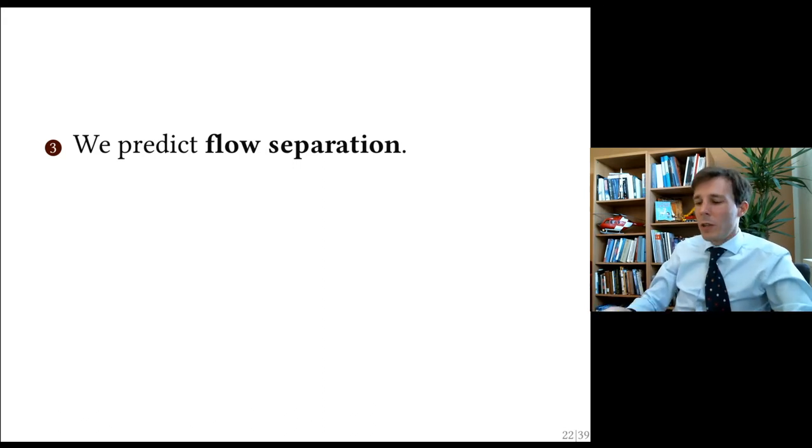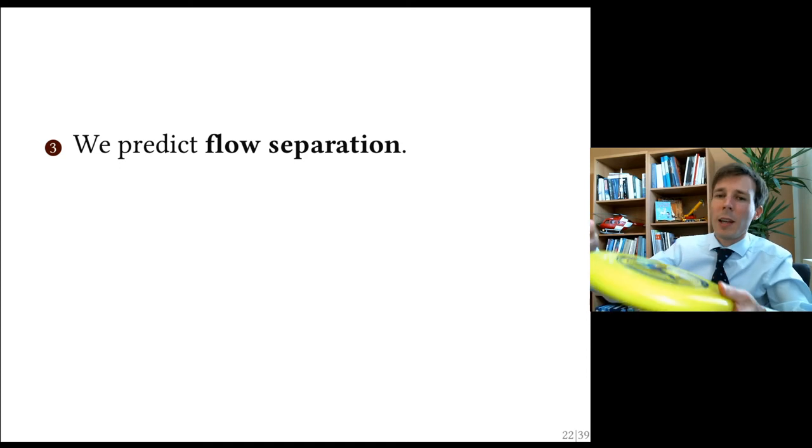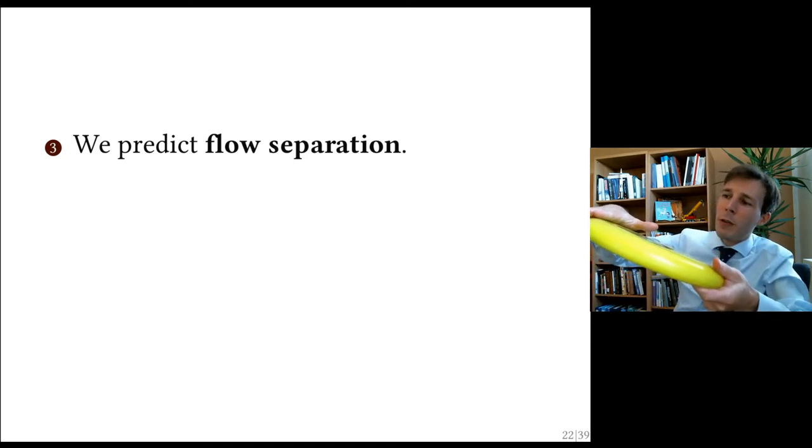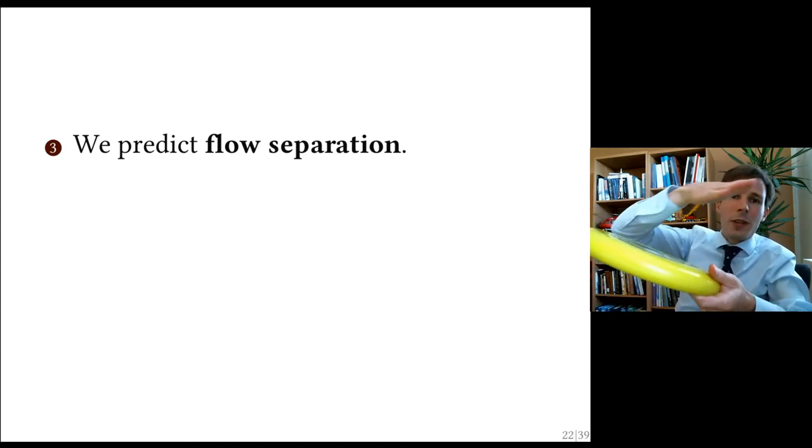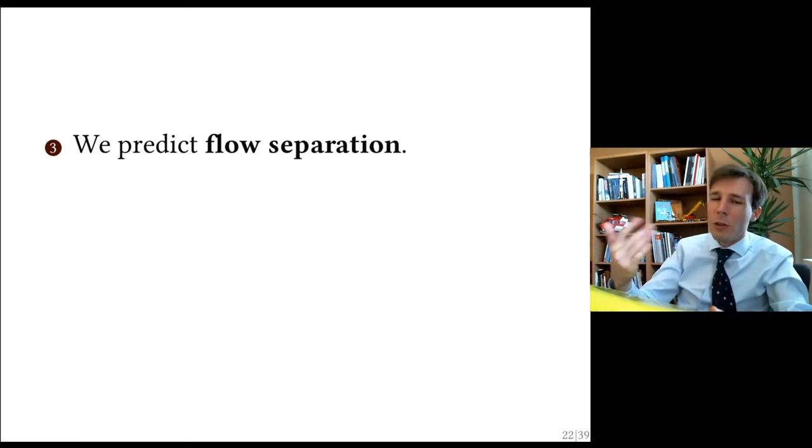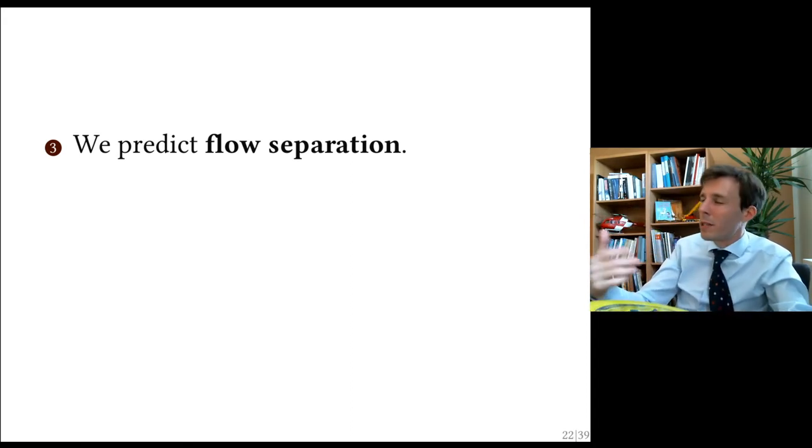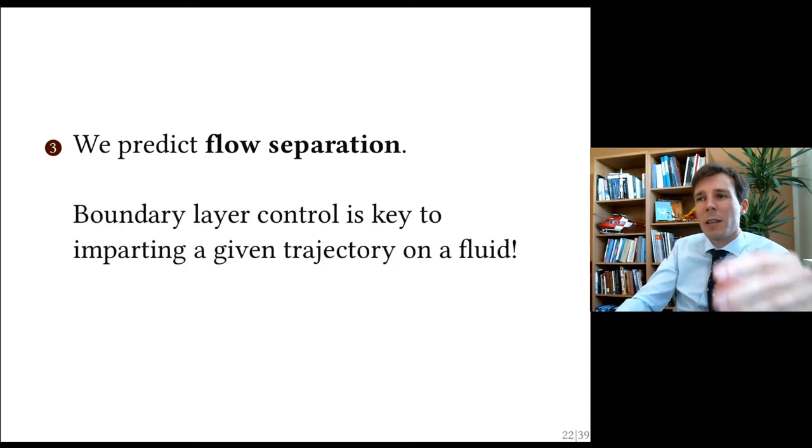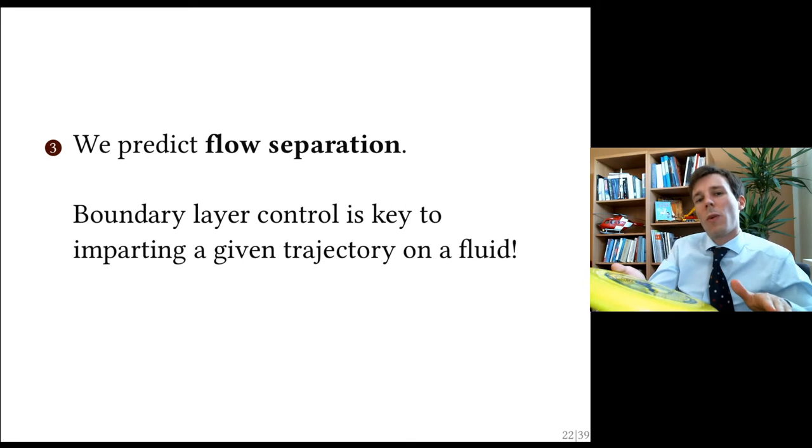So a good boundary layer solution is a quantification of the wall friction. And the last thing we would like to do is we predict separation. And separation is when the boundary layer follows your object and then tends to separate and leave the path of the object. And this is usually in flow mechanics, it's pretty nasty. Sometimes we look for that, but most of the time we try to prevent this. And understanding the boundary layer, controlling it, is the key to making sure the fluid flow will follow the trajectory of your object.